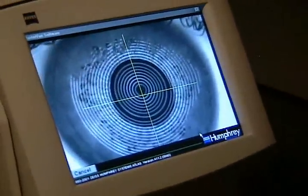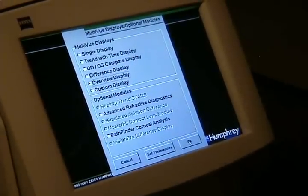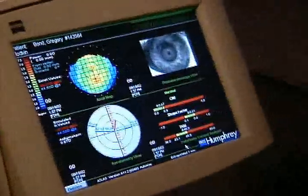A computer is then used to analyze the distortions in the reflections. Finally, the distortions are then converted into a color-coded map that can be printed out.